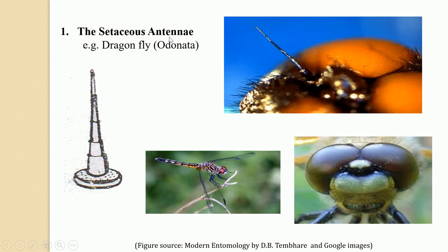This setaceous antennae is a characteristic of the Odonata — they are generally found in insects like the dragonfly. In this diagram you can see the dragonfly and the magnified photograph of the head of the dragonfly, where the clypeal region shows these bristle-like antennae, which are referred to as setaceous antennae.